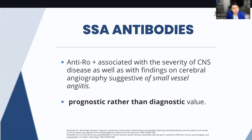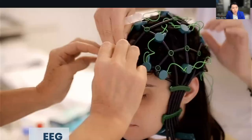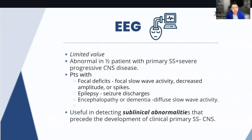We also use other tests like visual evoked potential, which are abnormal in 61% of patients. We use EEG or electroencephalogram, which sometimes has limited value, but it can be useful to detect subclinical signs of neurological involvement.